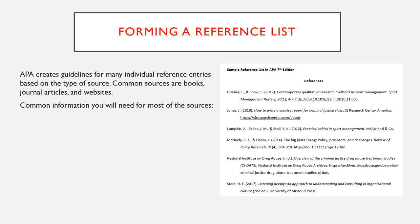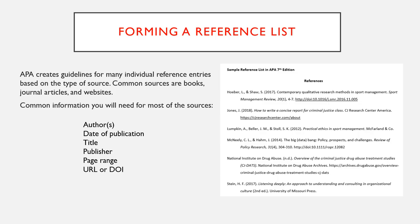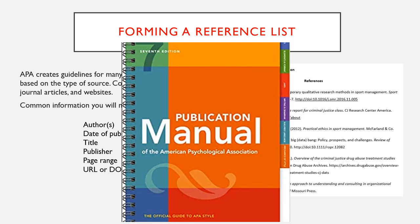APA creates guidelines for many individual reference entries based on the type of source — for instance, books, journal articles, and websites. Common information you will need for most sources includes author names, date of publication, title, publisher, page range, URL, or DOI, which stands for Digital Object Identifier. When writing or researching, save full text copies of your sources, as this will help you create the reference list. The next part provides examples of reference entries based on common types of sources such as books, journal articles, and websites. Refer to the APA Publication Manual 7th edition for a detailed description on citing various other types of sources.